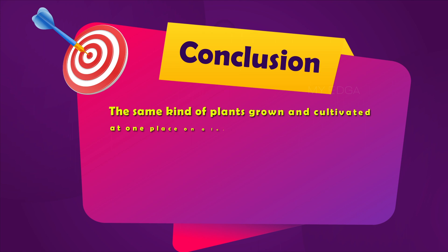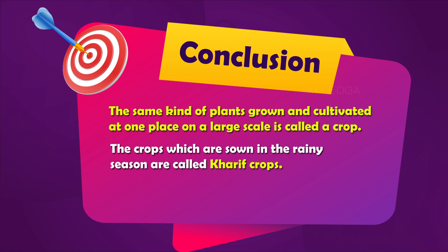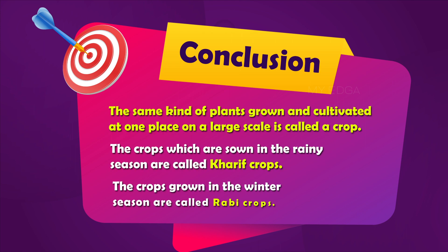From this video you have learned that a crop is a plant of the same kind that is cultivated at one place on a large scale to get useful products. In India, crops can be broadly categorized into two types based on seasons: Rabi crops and Kharif crops.